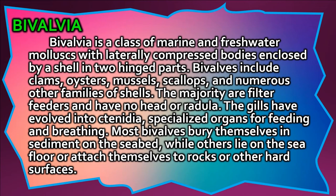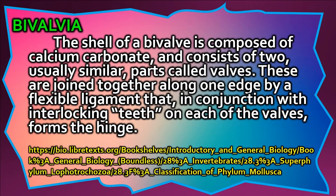Bivalvia is a class of marine and freshwater molluscs with laterally compressed bodies enclosed by a shell in two hinged parts. Bivalves include clams, oysters, mussels, scallops, and numerous other families. The majority are filter feeders and have no head or radula; the gills have evolved into ctenidia, specialized organs for feeding and breathing. Most bivalves bury themselves in sediment while others lie on the sea floor or attach to rocks. The shell consists of two valves of calcium carbonate joined by a flexible ligament and interlocking teeth forming the hinge.